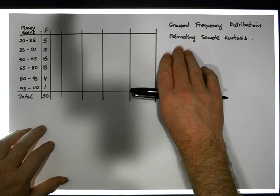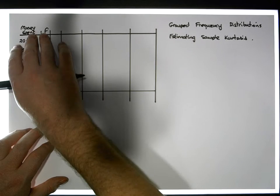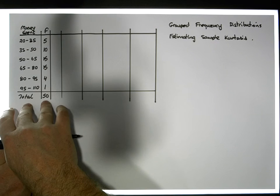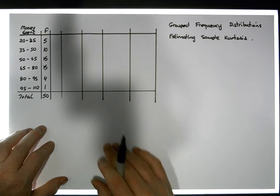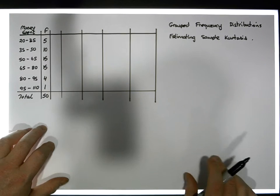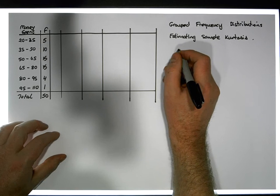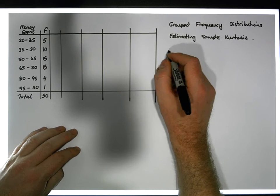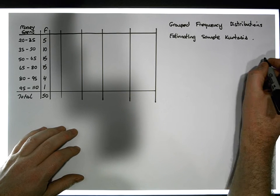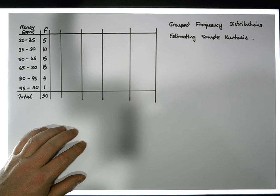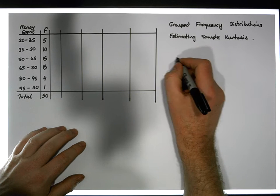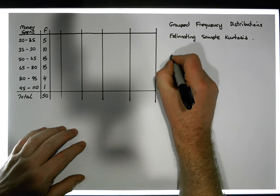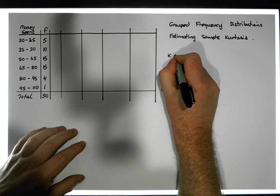What we'd like to do is numerically estimate from a grouped frequency distribution what its kurtosis is — how flat or how peaked it is. We have a formula that allows us to do that. The formula I'm going to put down here is one we usually use when dealing with raw data, and we're going to make a slight modification to it.